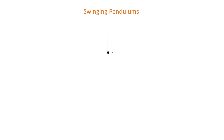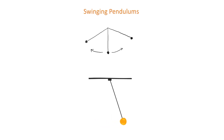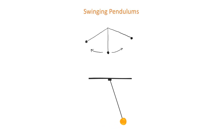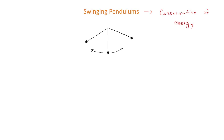In this video, we are going to use the conservation of energy to understand the swinging motion of pendulums. A pendulum is made up of a suspended object that can swing back and forth. The goal of this video is to use the conservation of energy to describe the motion of pendulums.